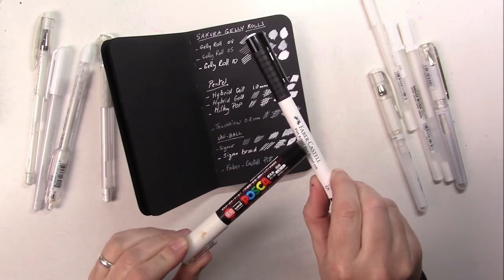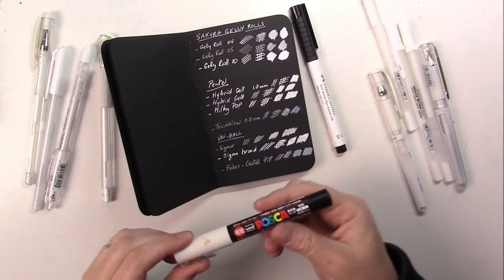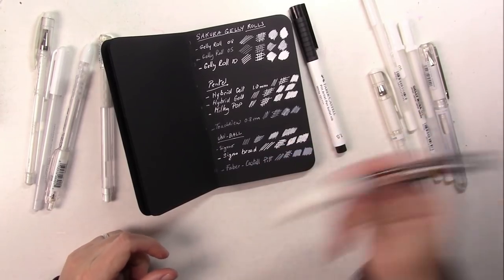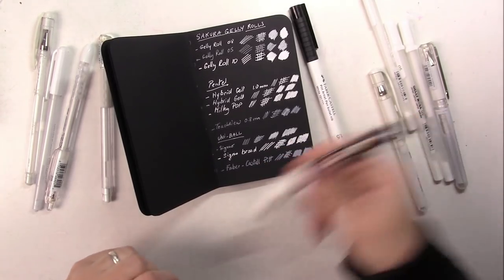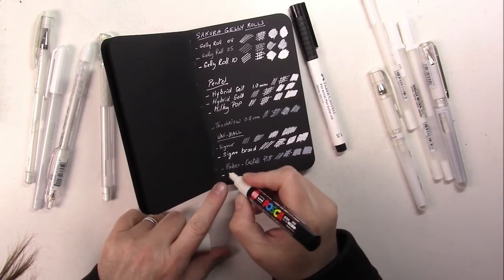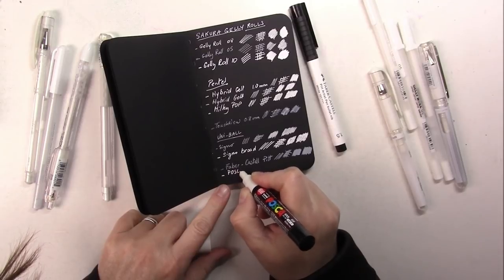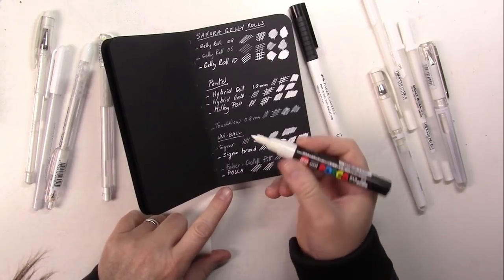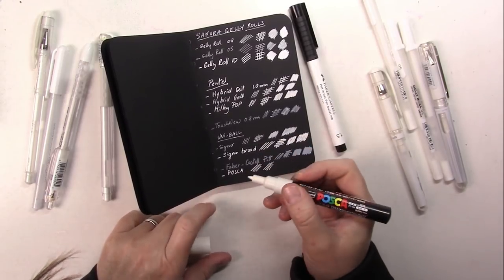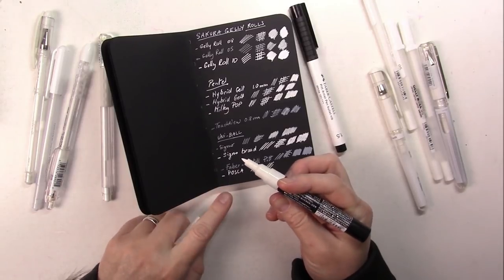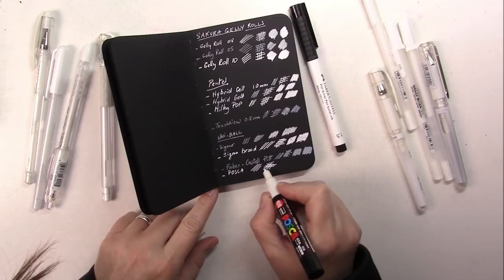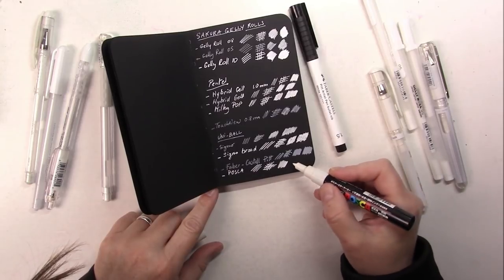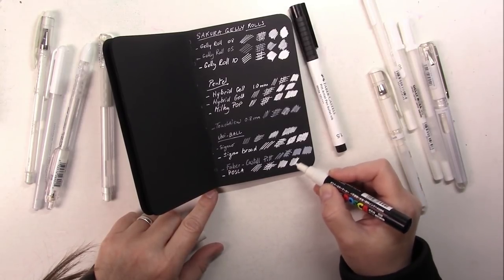And the Posca, this is not India ink, this is actually acrylic paint, so you can tell there's a ball in there. You have this is a small one, you have medium and big, I think they make brush ones too. Like the Faber-Castell Pitt, this is a marker so it's easier to color things with it.